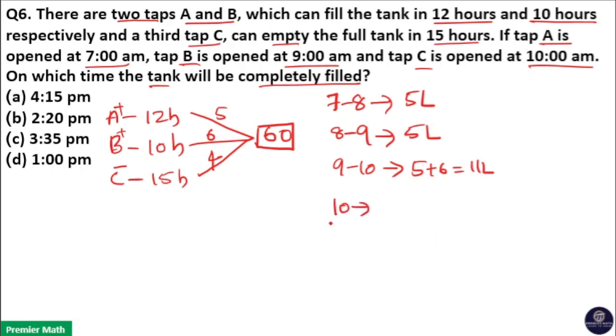Now, from 10am onwards, all the taps are working. C is opened at 10am. So, all the taps are working means 10am onwards, 5 plus 6 minus 4 is filling. That is 7 liters is filling.